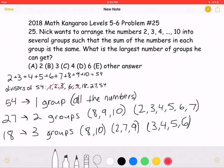If the sum of the numbers in each group is 27, then we would have two groups: (8, 9, 10) and (2, 3, 4, 5, 6, 7).